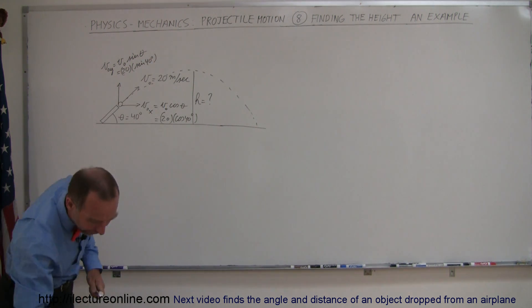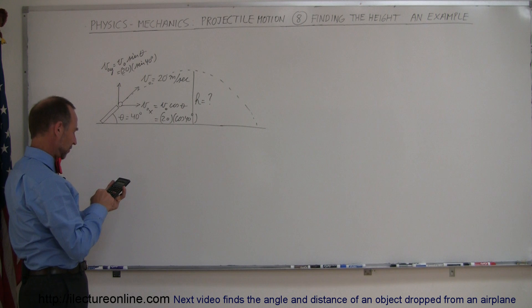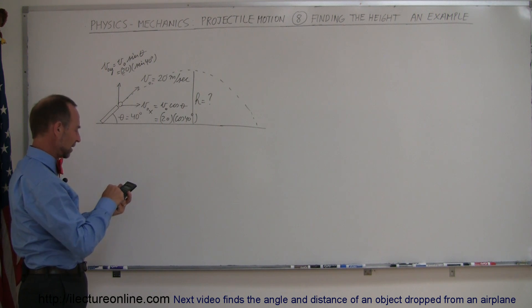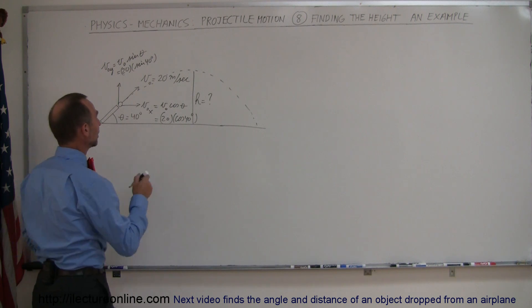So let's get a calculator and find out what those are. So we have 40, take the cosine, times 20 and so we get 15.3 meters per second.